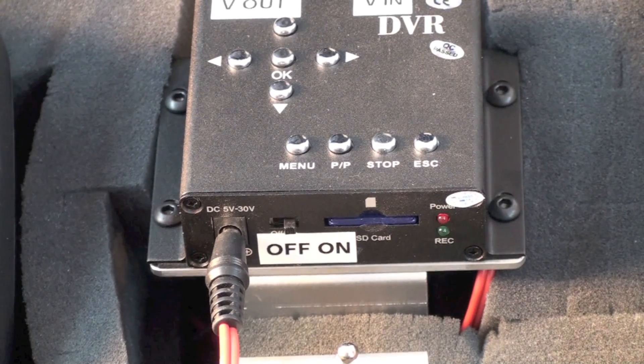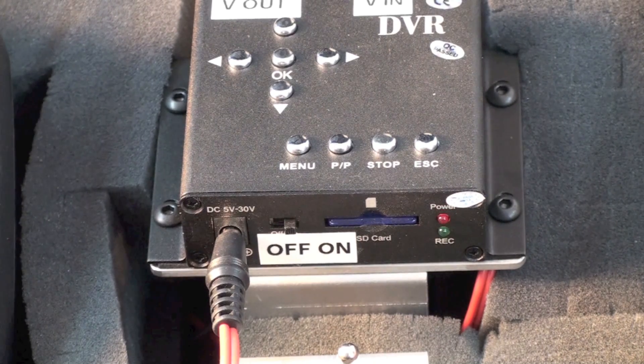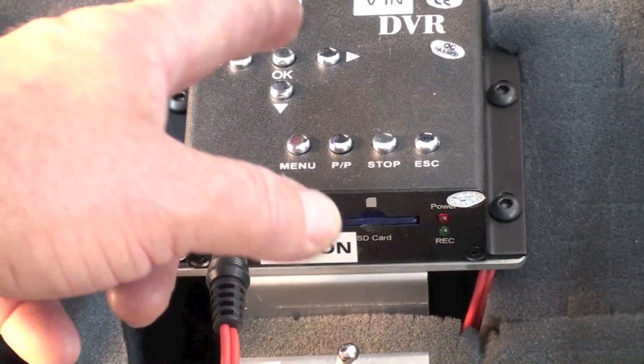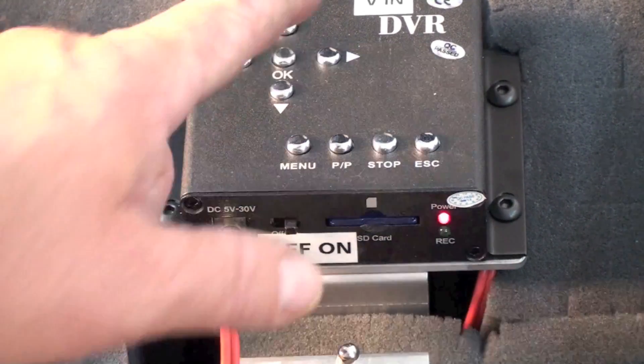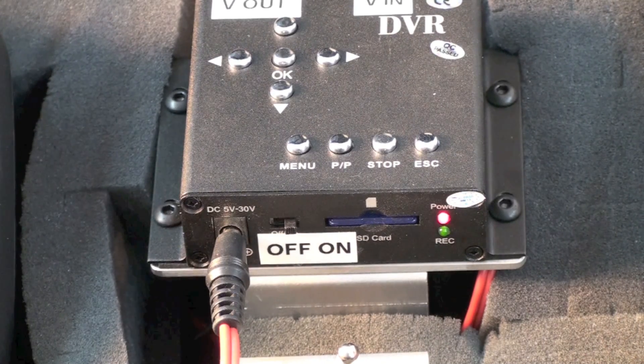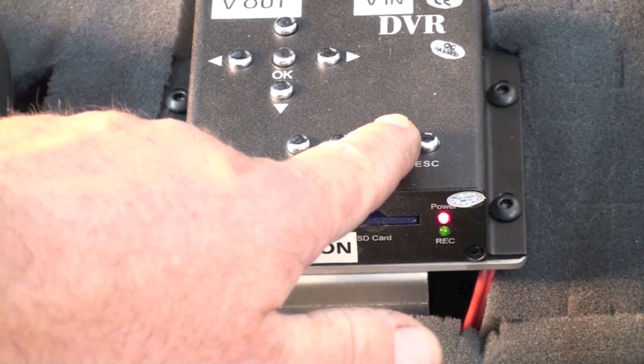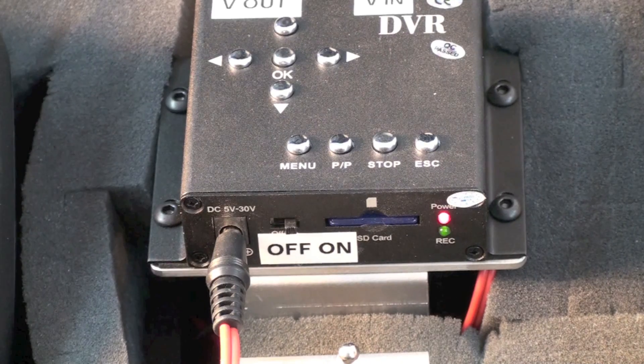To record the video, simply drive the robot into a position that you want to record. Hit the OK button on the DVR and it'll start recording. To stop, hit the stop button and it'll stop recording.